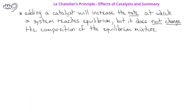What will be the effect of adding a catalyst to a system at equilibrium? In short, adding a catalyst will have no effect on the composition of the equilibrium mixture. The catalyst will increase the rate at which the system reaches equilibrium, but the equilibrium itself is not disturbed by the presence of a catalyst.